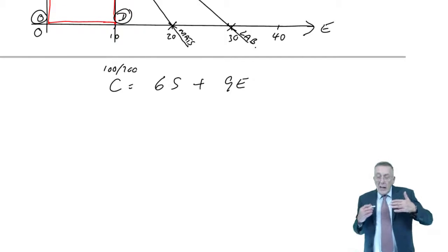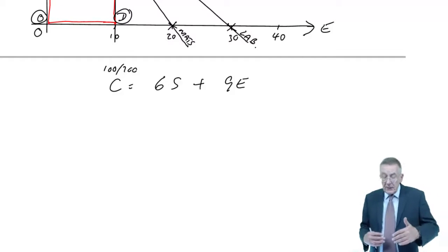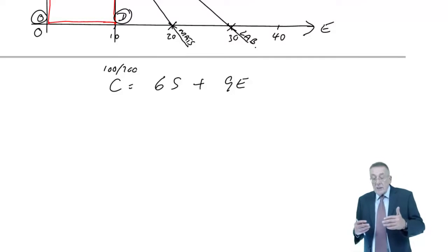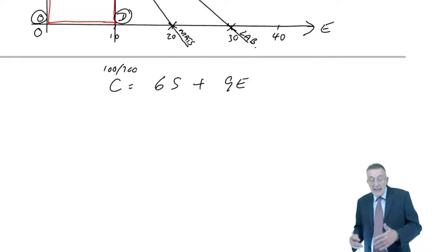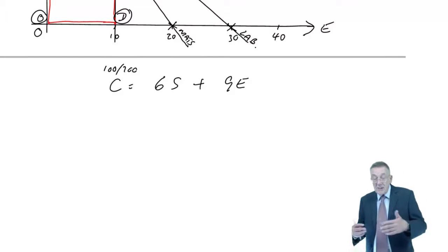But the lines, the combinations, it'll be a straight line again, that whether it's 6S plus 9E is 100, or whether it's 6S plus 9E is 300.